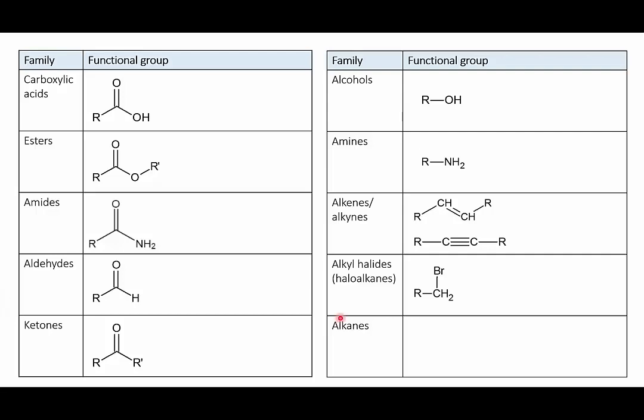Several of the simpler families are already familiar to you. The alkanes, the alkenes and the alkynes. Alkanes don't really have a functional group since they're the most basic of hydrocarbons. Alkenes have a double bond and alkynes have a triple bond. Propene is an example of an alkene.